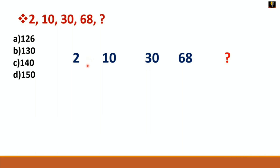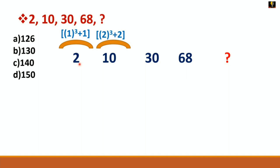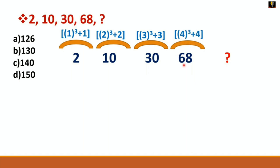To solve this problem, just observe: 2 can be written as 1³ + 1, which is 1 + 1 = 2. The second number: 2³ + 2 = 8 + 2 = 10. Then 3³ + 3 = 27 + 3 = 30. Now you can easily see that 68 is 4³ + 4 = 64 + 4 = 68.